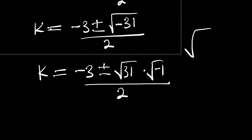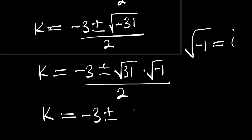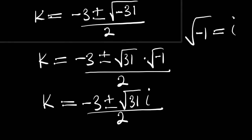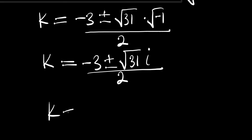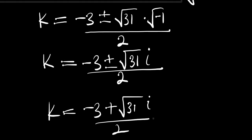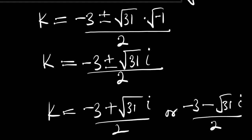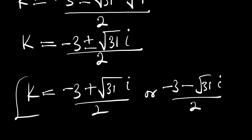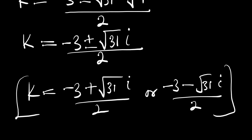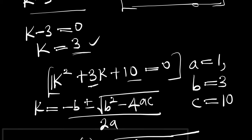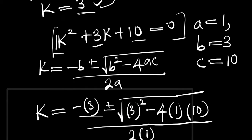Since the square root of negative 1 equals the imaginary number i, we replace it: k equals negative 3 plus or minus the square root of 31 times i, divided by 2. So the two complex solutions are k equals (negative 3 plus √31·i) / 2, or k equals (negative 3 minus √31·i) / 2.